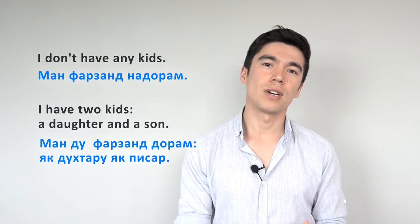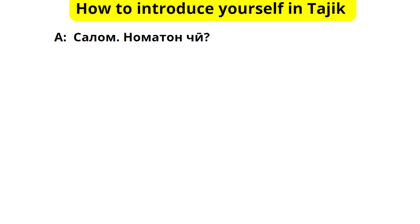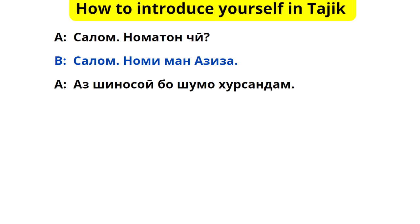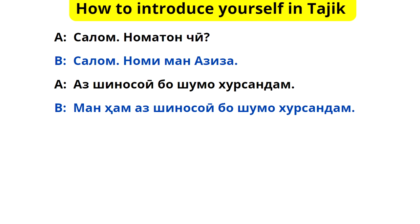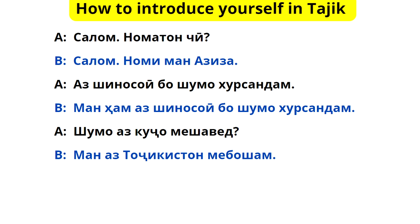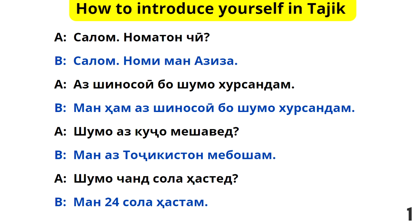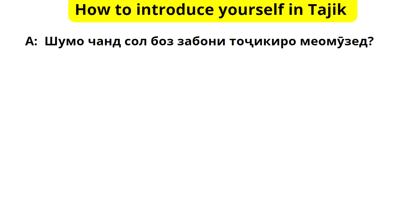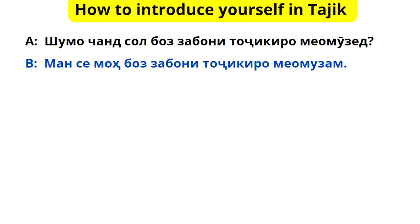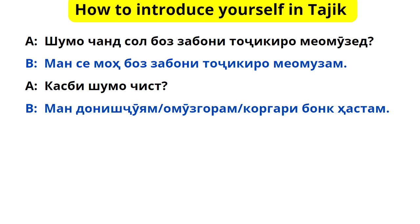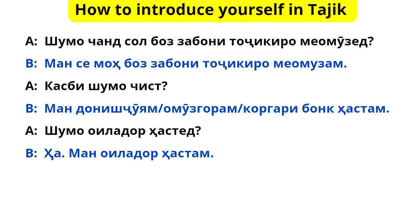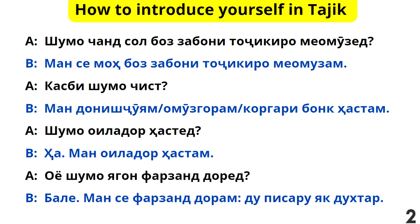Now let's listen to a dialogue — it will be only in Tajik. Salom. Nomat čist? Salom. Nomi man Aziz. Ashinosoyi bo shumo khursamdam. Man ham ashinosoyi bo shumo khursamdam. Shumo az kujo me shabed? Man az Tajikiston me bosham. Shumo čand sala hasted? Man 24 sala hastam. Shumo čand moh boz zaboni Tojikiro me omuzed? Man 3 moh boz zaboni Tojikiro me omuzam. Kasbi shumo čist? Man donishcuyam. Man omuzgora. Man korgari bonk hastam. Shumo oylador hasted? Ha, man oylador hastam. Oyo shumo yagon farzand dorid? Bale, man se farzand doram — du pisar va yak duhtar.